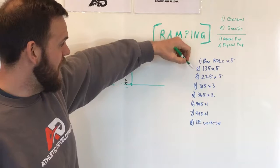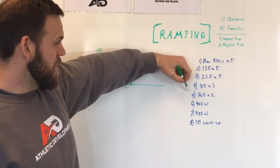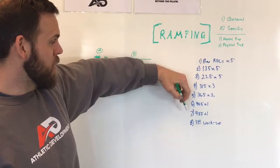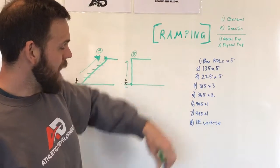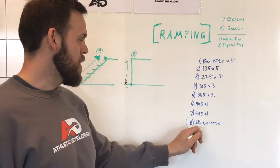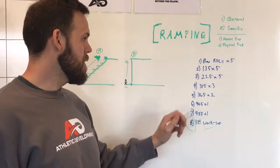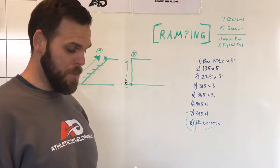Bar RDL for five. One plate for five. Two plate for five. Three plate for three. 365 for two. 405 for one. 455 for one. And my eighth ramp set, I'm finally getting to my first, or my first set is my eighth set. It's seven ramp sets building up to it.